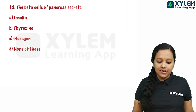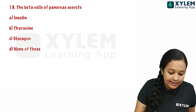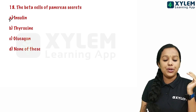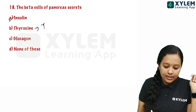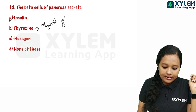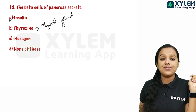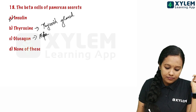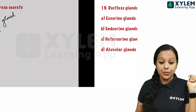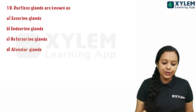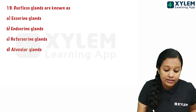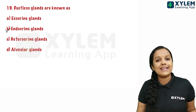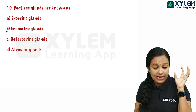The eighteenth question: the beta cells of the pancreas secrete — insulin, thyroxin, glucagon, or none of these. Insulin is produced by beta cells; glucagon is also produced by the pancreas; thyroxin is from the thyroid gland. The nineteenth question: ductless glands are called endocrine glands.